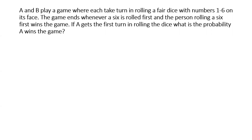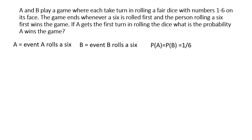Let's start by representing the event that A rolls a 6 at any one turn by A, and similarly the event that B rolls a 6 by the notation B. The probability of event A happening equals the probability of event B happening, which equals 1/6, because the dice is fair — all 6 numbers are equally probable at any one roll. So the chance of the number 6 appearing is 1/6.